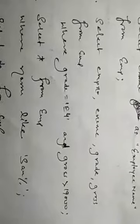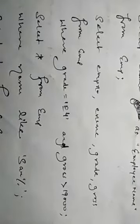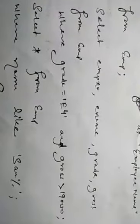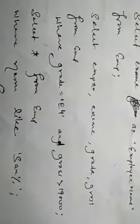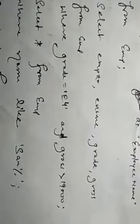Here are some more conditions: SELECT employee_number, ename, grade, gross FROM employee WHERE grade = 'E4' AND gross > 19000. This displays only the employee number, name, grade, and gross of employees whose grade is E4 and salary is greater than 19,000.